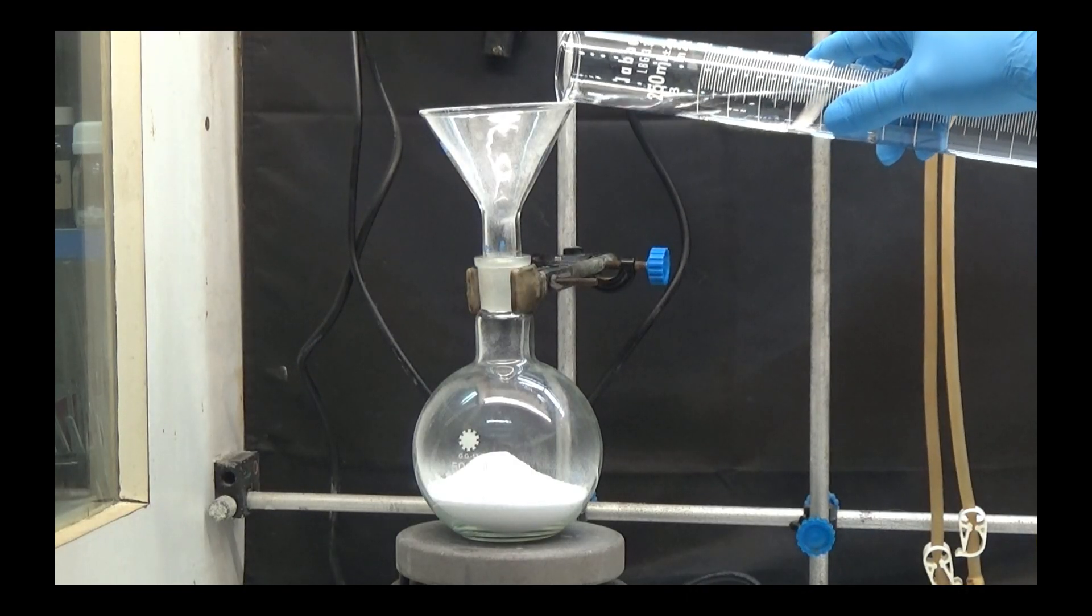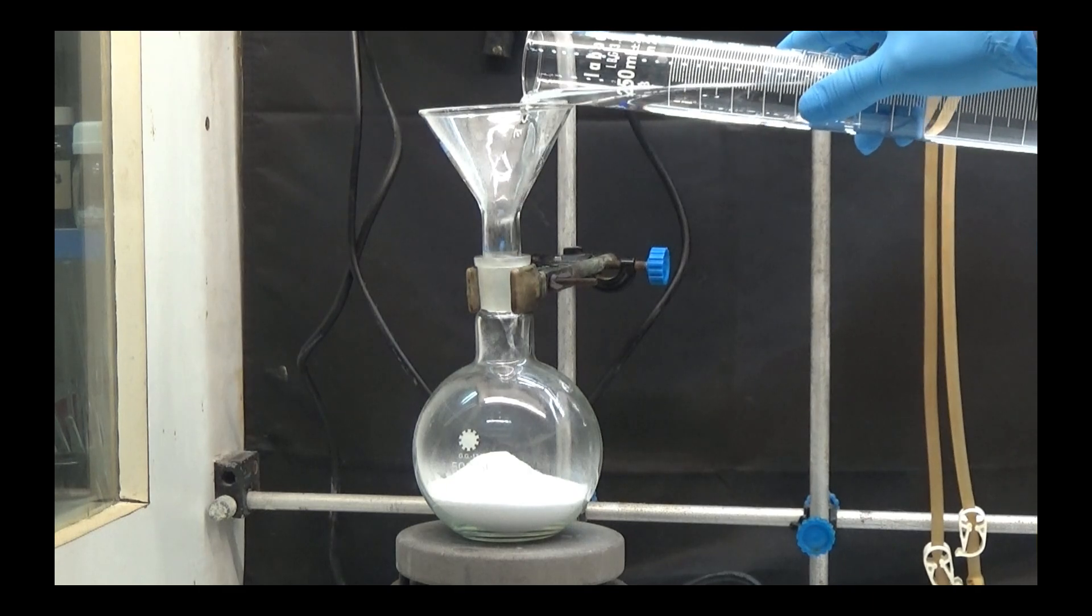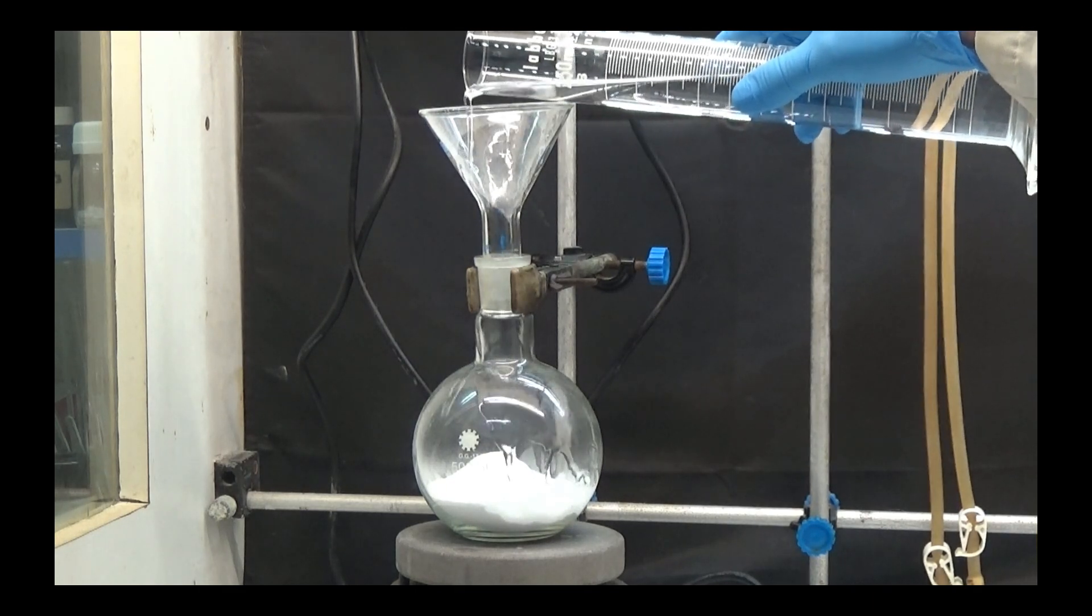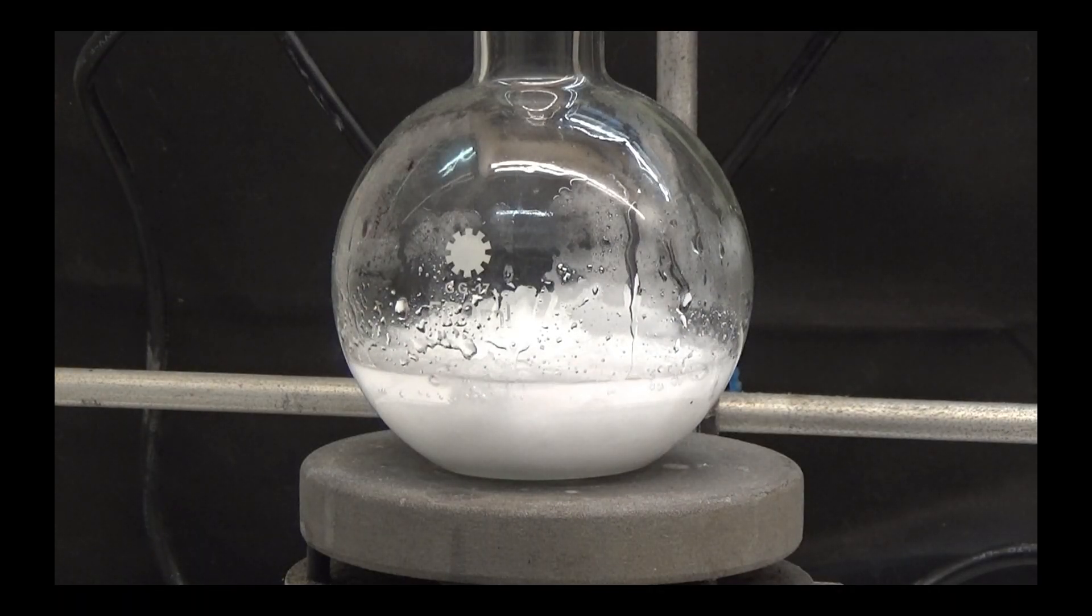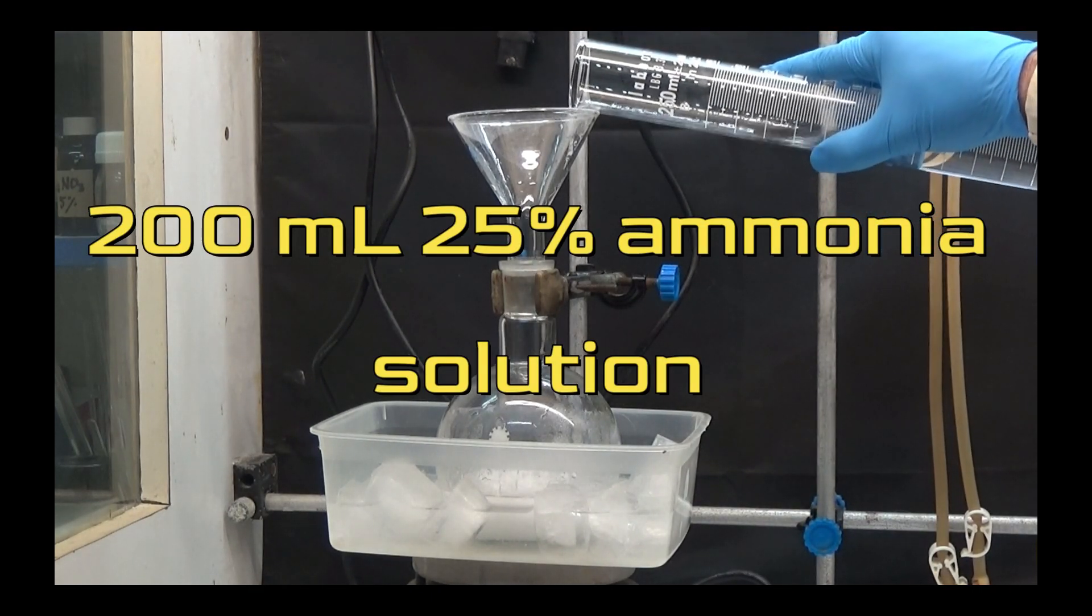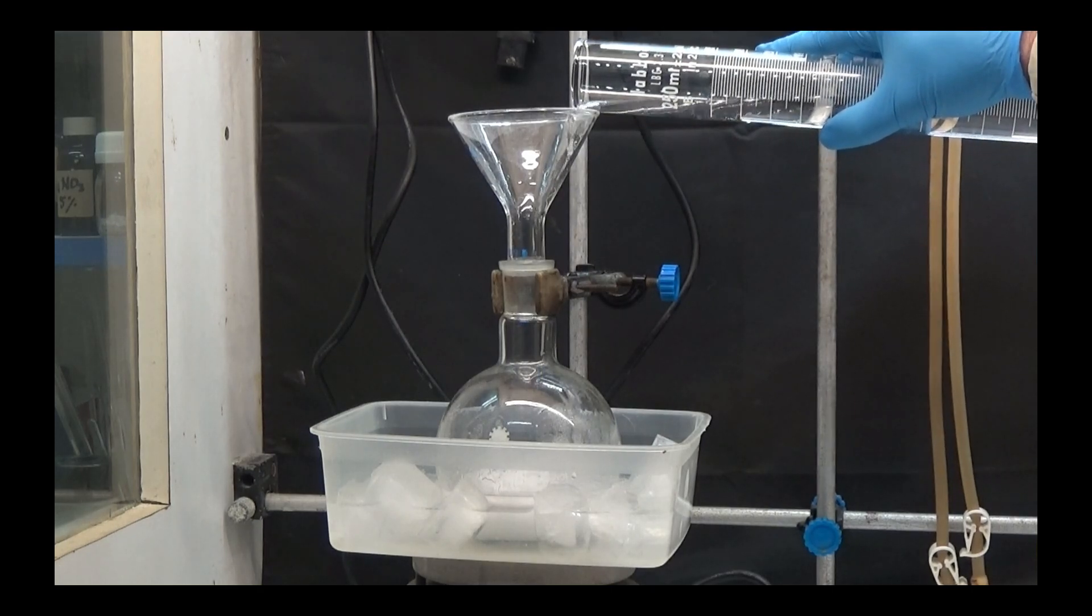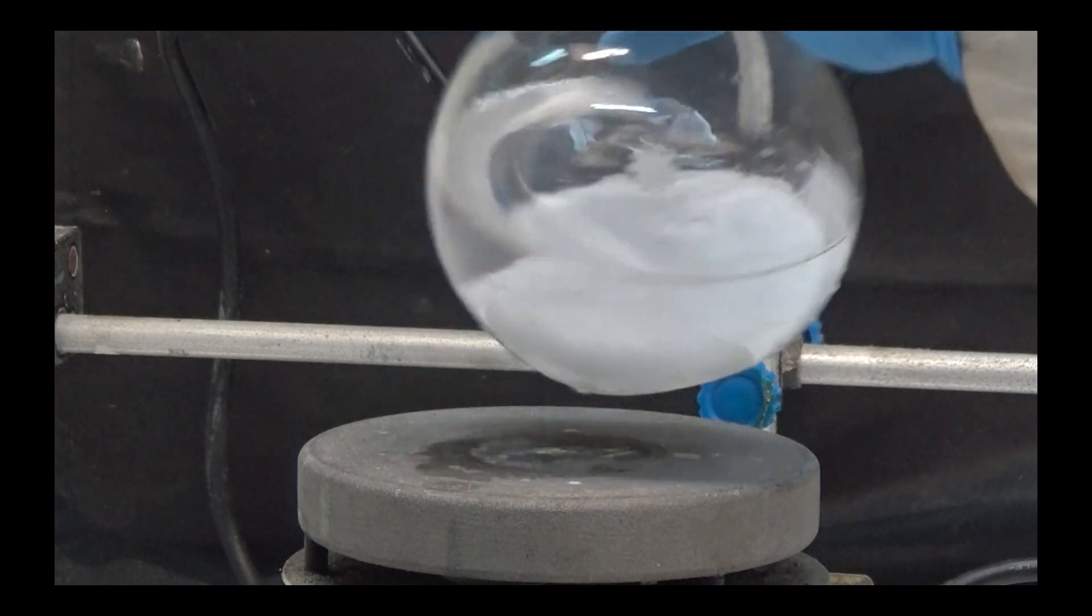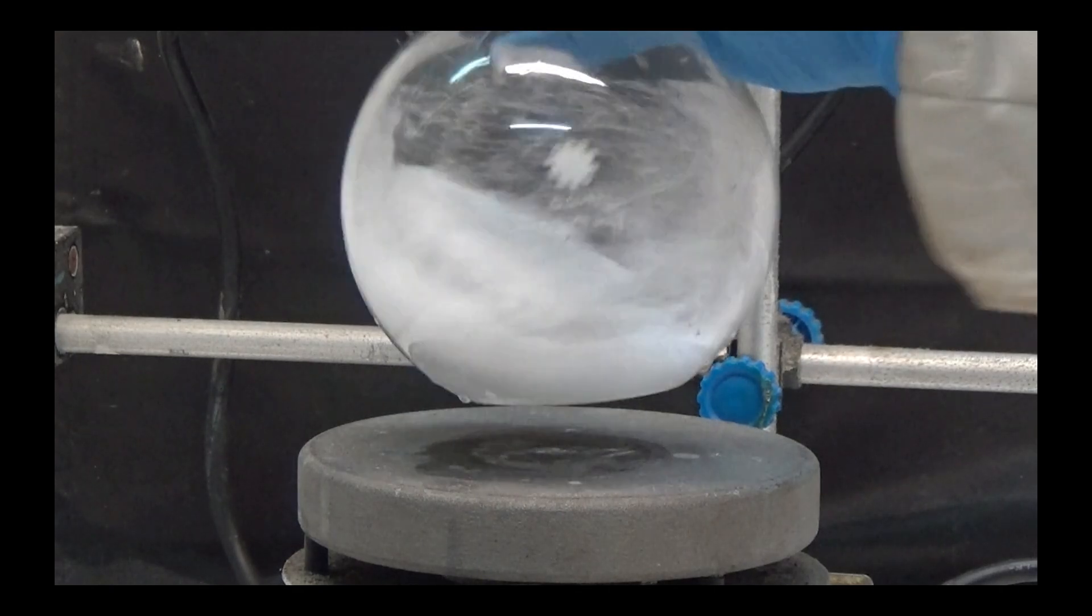We slowly add 25% ammonia solution and observe a reaction and increase in heat. To avoid a violent reaction, I immerse the flask in an ice water bath and slowly add 200ml of a 25% ammonia solution while stirring. Stir for a short time until most of the acid is dissolved.